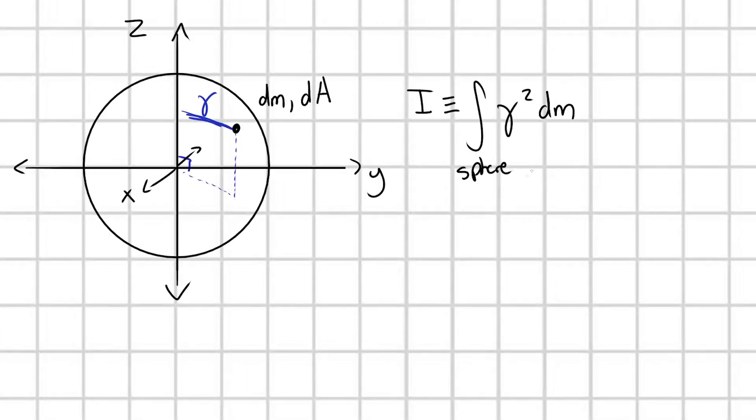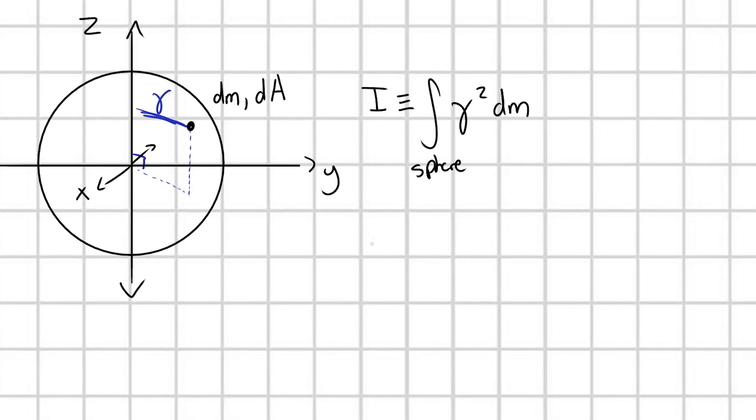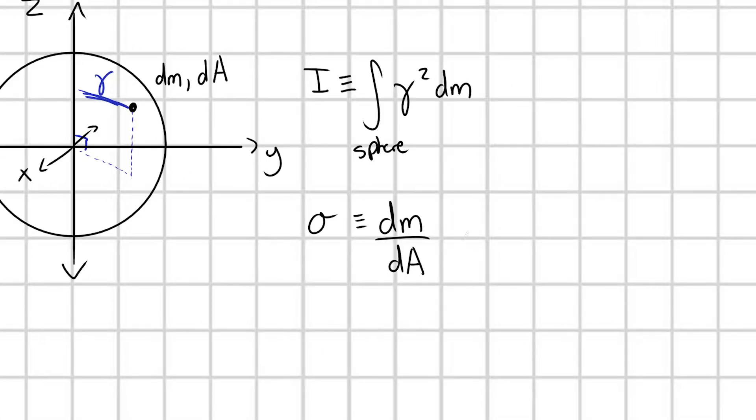So the first thing that we need to do, we know that this gamma is some function of spatial coordinates, so that's not matching our variable of integration dm, so we need to fix that first. This sphere is going to have some surface area density, I'll call that sigma, and that is defined as some dm per some infinitesimal area element dA that each of those dm's occupy. In which case, we can rewrite dm is equal to sigma dA.